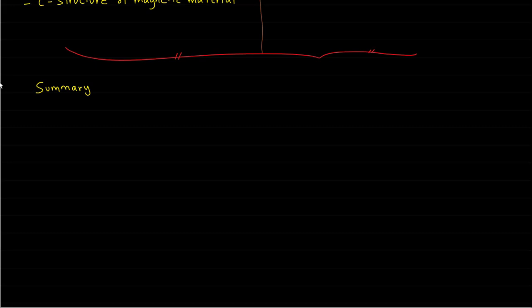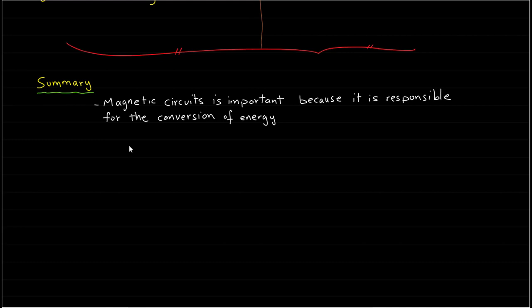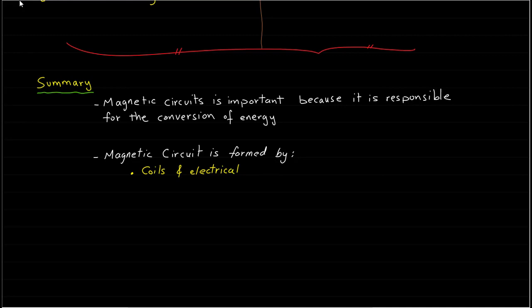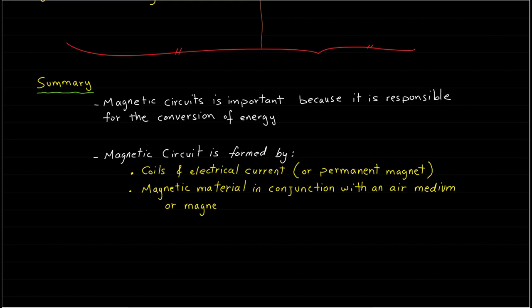To summarize, the magnetic circuit is important because it is responsible for the conversion of energy. All the above devices and machines are able to convert energy because of the presence of the magnetic field or magnetic circuit. The second important point we learned is that the magnetic circuits in most electrical machines and devices are mainly formed by coil and electrical current and magnetic material in conjunction with an air medium or magnetic material medium only. In the future lectures, we will learn more about the magnetic material properties and some methods for analyzing the magnetic circuits.